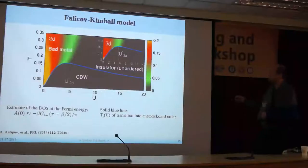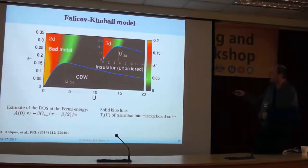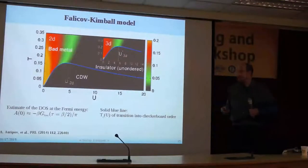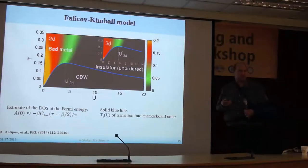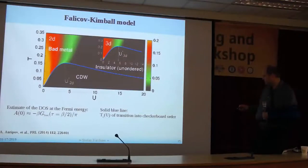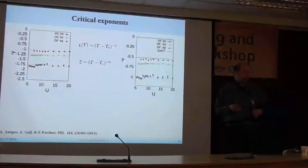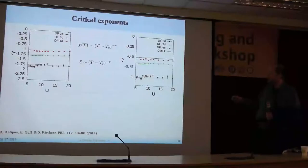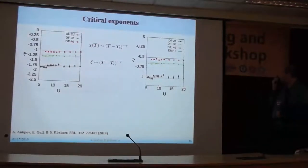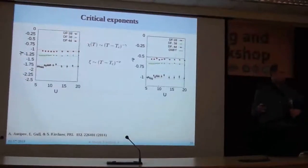Temperature versus Coulomb repulsion: one sees something characterized as a bad metal — color here means the spectral function has a finite value near the Fermi energy, and everything black means you have an insulator. The blue line is the transition line from the unordered insulator into the charge density wave with checkerboard order. If you calculate the critical exponents, this is what you get: nu and gamma as a function of the Coulomb interaction. We only know that for large U it should have the values for the Ising model in four, three, and two dimensions.